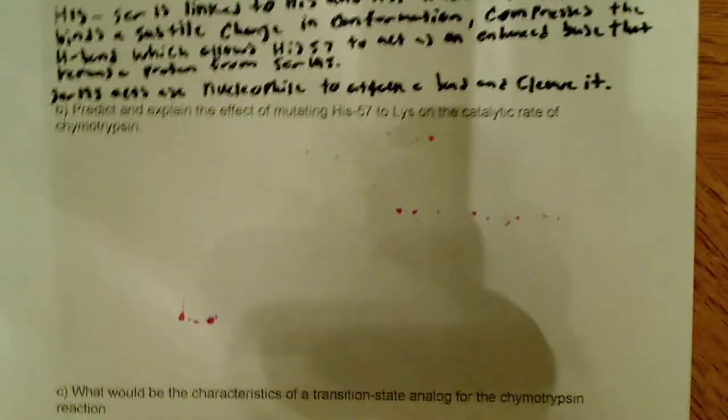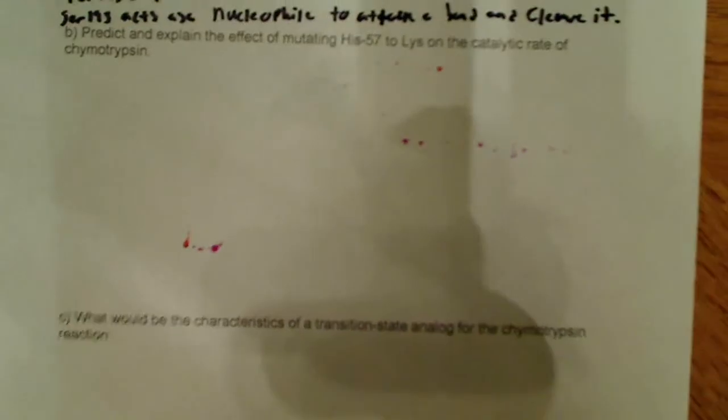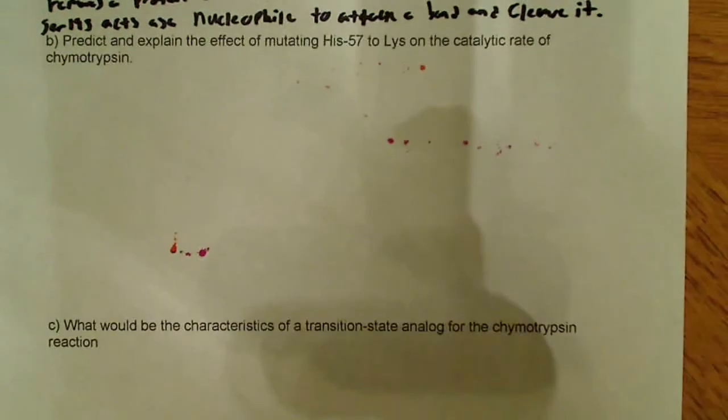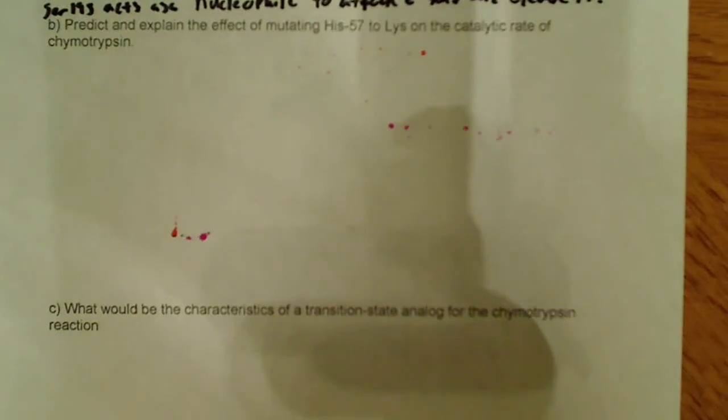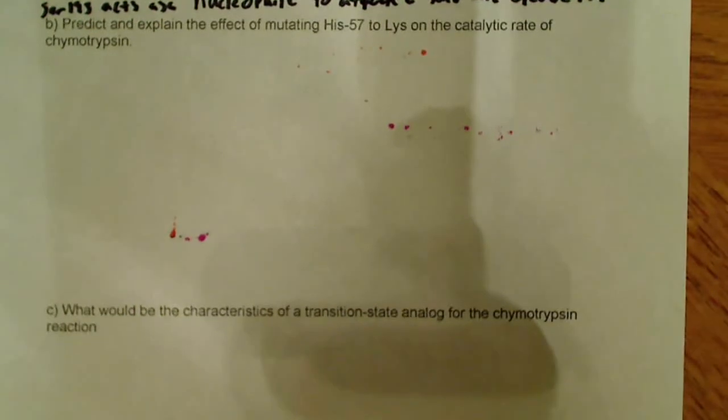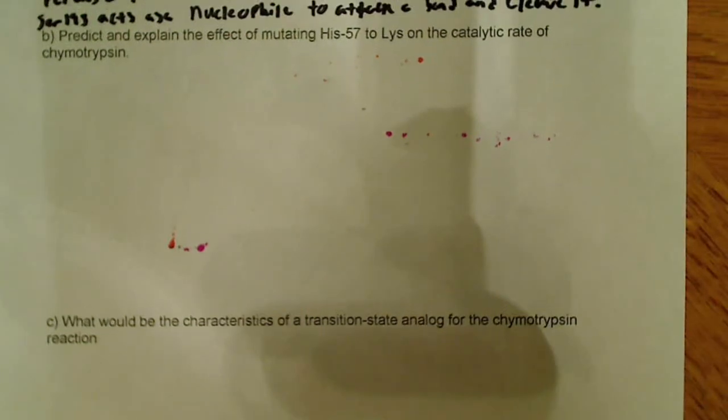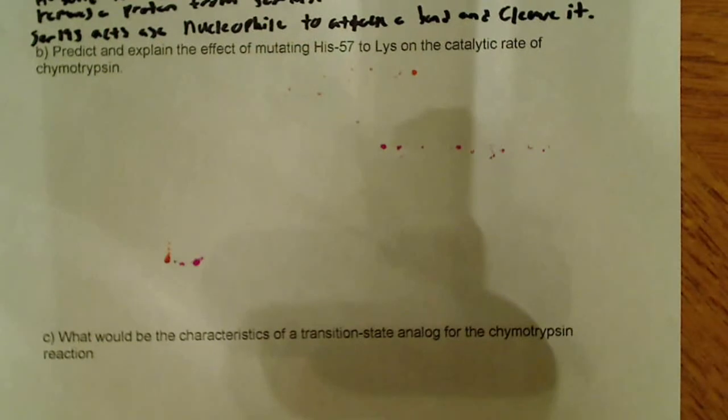That's a lot of information. It's a lot of complicated mechanism type stuff that, again, I don't know how important it will be. I'm just doing this kind of for completeness. So, if I can get my camera to focus here, there's actually another question about this. And it says, predict and explain the effect of mutating histidine 57 to lysine on the catalytic rate of chymotrypsin.